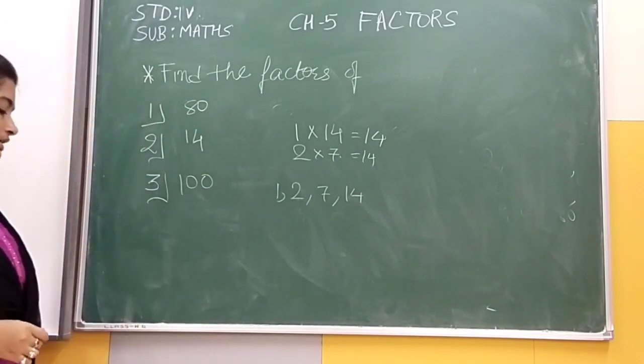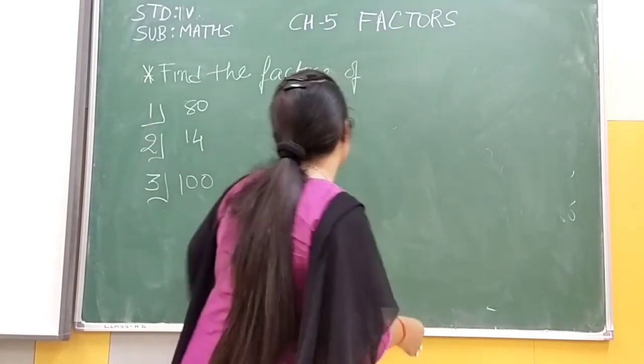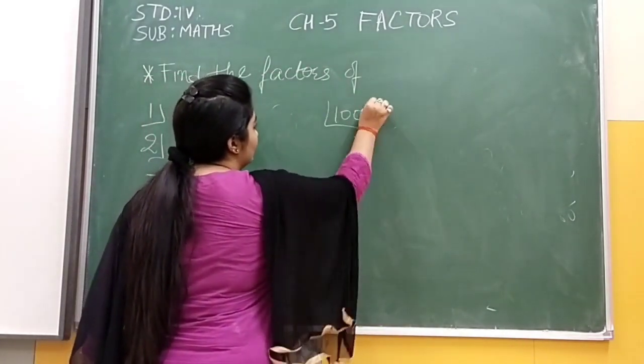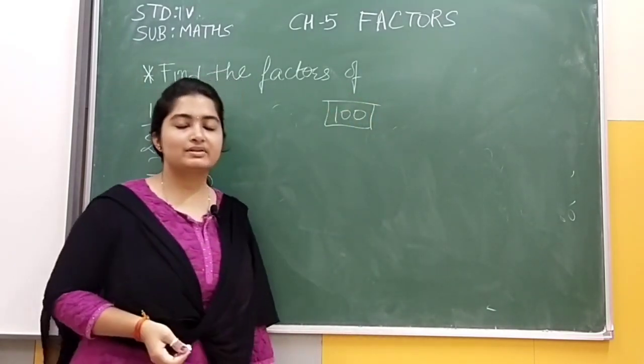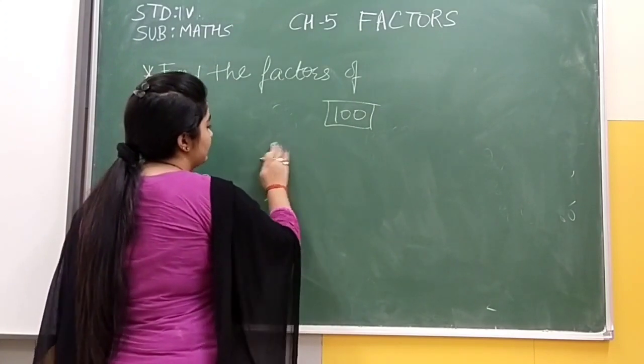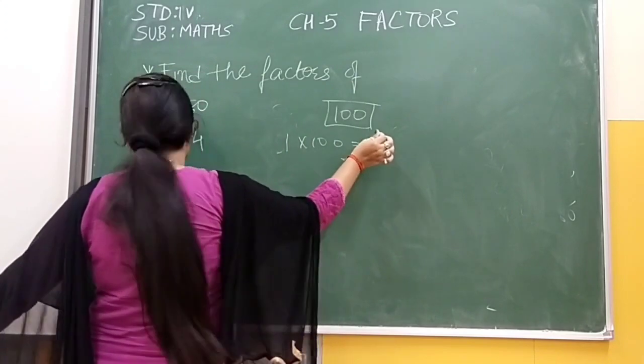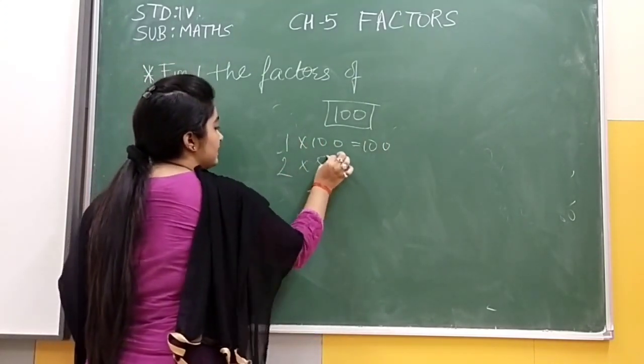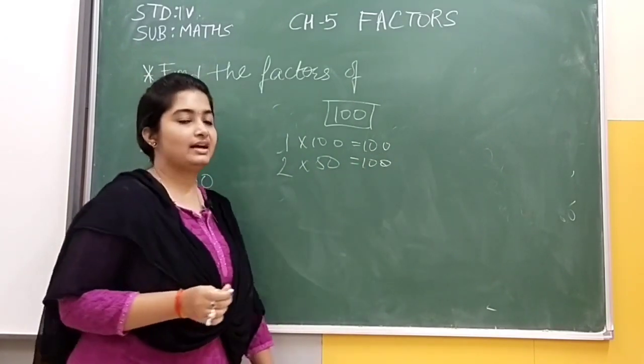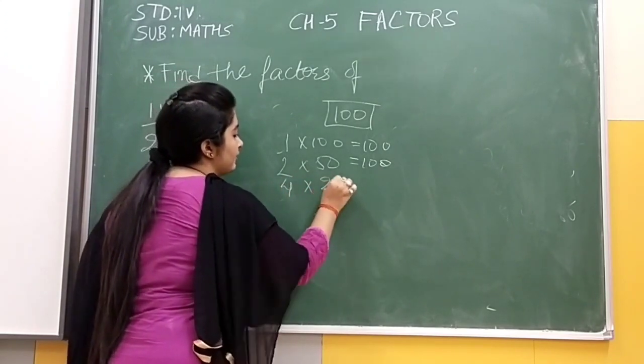Now let us see the next one, which is 100. 100 will have many factors because this number is divisible by almost all numbers. Let us see. We'll start from 1. 1 into 100 is 100. Then 2 into 50 is 100.